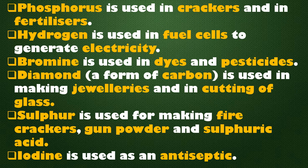Phosphorus is used in crackers and fertilizers. Hydrogen is used in fuel cells to generate electricity. Bromine is used in dyes and pesticides. Diamond, a form of carbon, is used in making jewellery and in cutting glass. Sulphur is used for making firecrackers, gunpowder, and sulphuric acid. Iodine is used as an antiseptic and applied on wounds.